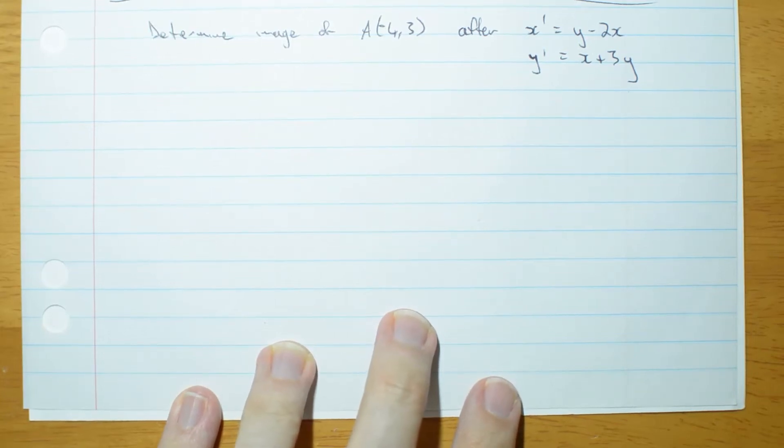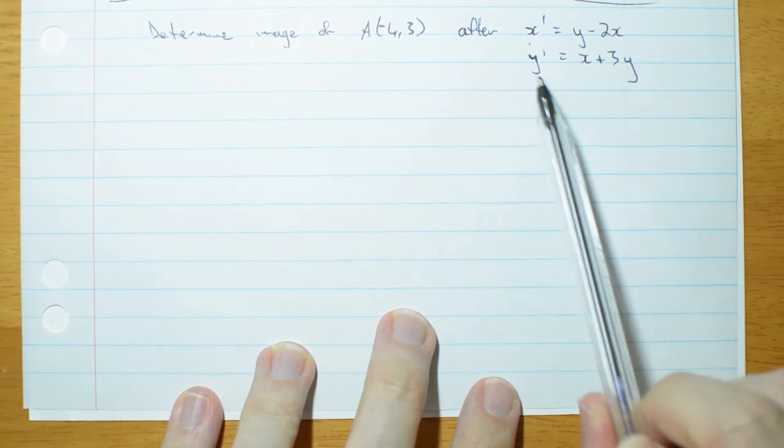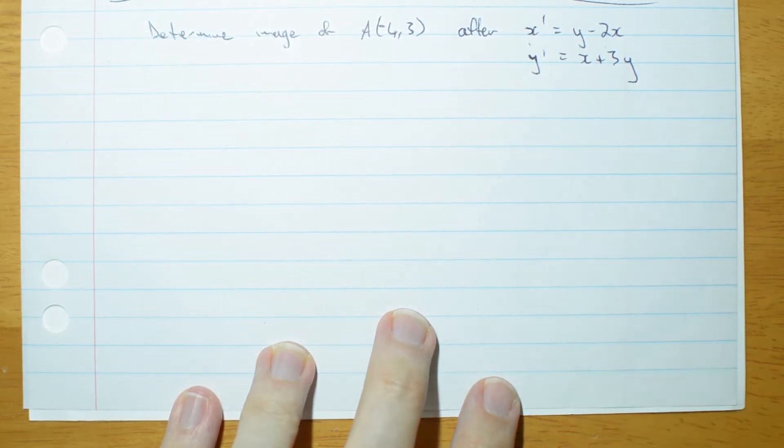Determine the image of the point A(-4, 3) after undergoing the transformation described by x prime is y minus 2x and y prime is x plus 3y.